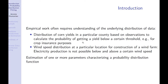You can also think about the wind speed distribution at a particular location. If you are thinking about constructing a wind farm or wind turbine, then electricity production or use of the turbine is not possible below or above a certain wind speed. Given data on the wind speed distribution at the location, you can calculate the probability that in a given year the wind speed falls below or above a certain level.